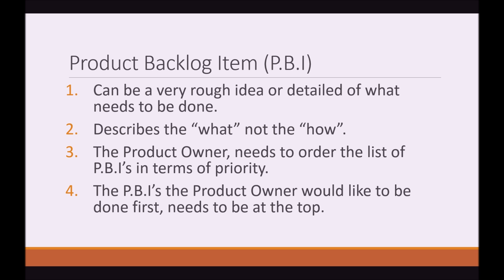A Product Backlog Item can be a very rough or very detailed description of what needs to be done. A PBI describes the what and not the how. The Product Owner needs to order the list of PBIs in terms of priority, with the items they'd like done first at the top of the list.